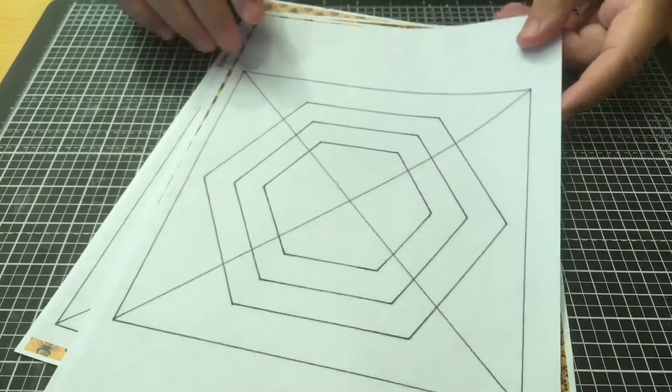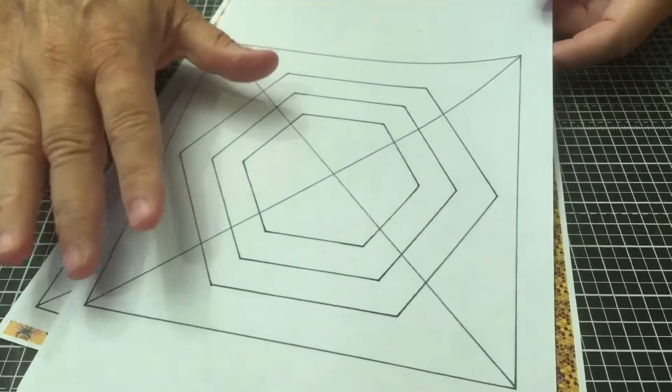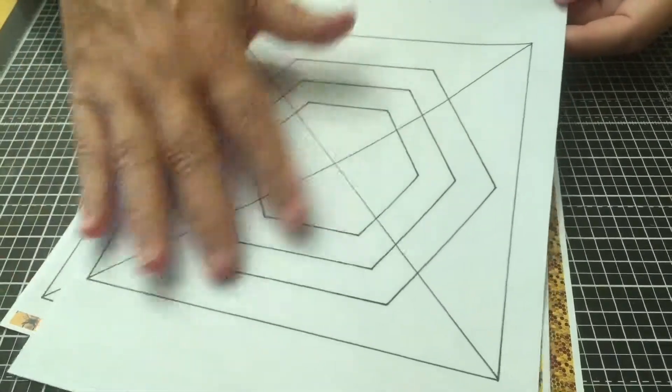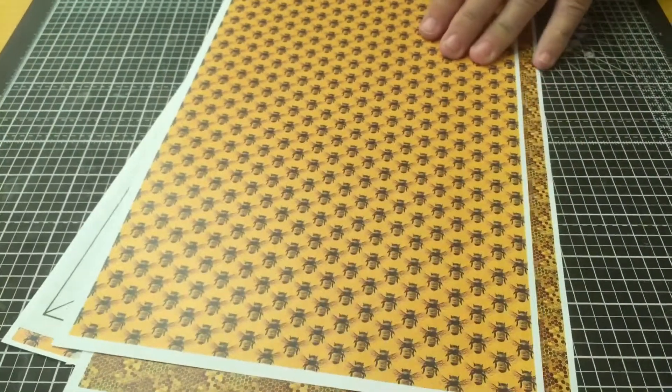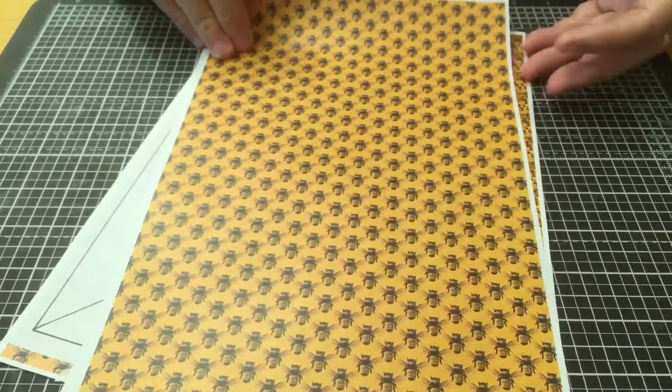I've printed out the template that we're going to use for this design onto thin paper. Next, you want to also print out some background paper onto the card you're going to use.